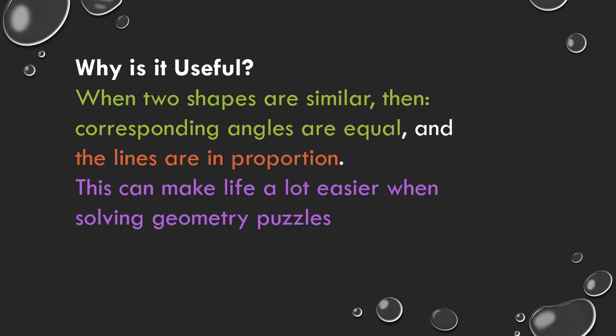You should know why similarity is useful in geometry. When two shapes are similar, the corresponding angles are equal and the sides are in proportion — it means the lengths of the lines are in proportion. This can make life a lot easier when solving geometrical puzzles — that means finding the unknown values or unknown lengths can be made easy using similarity. That's why we use similarity in geometry.